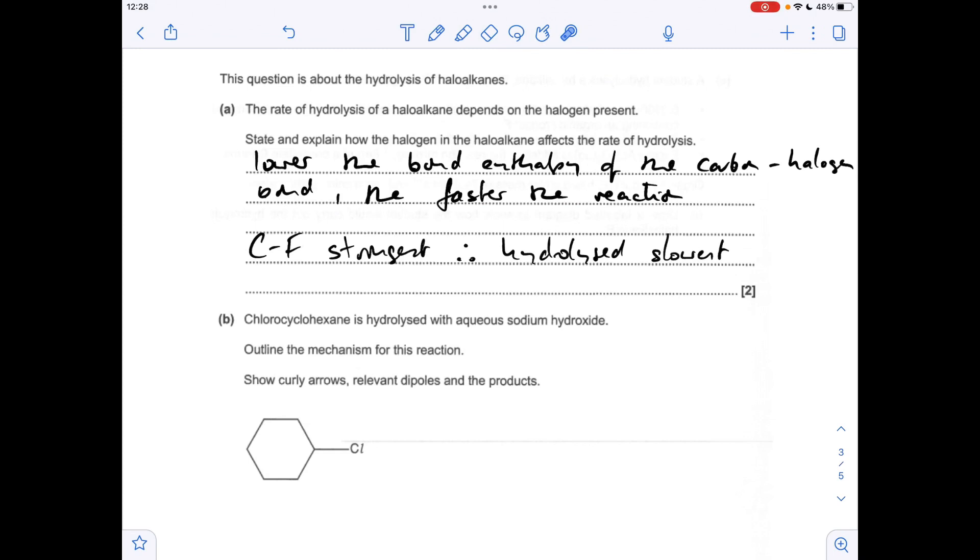So the trend in the halogens, the CF bond is the strongest, so that's hydrolyzed the slowest. And the one at the bottom, CI, is the weakest, and therefore hydrolyzed the fastest.